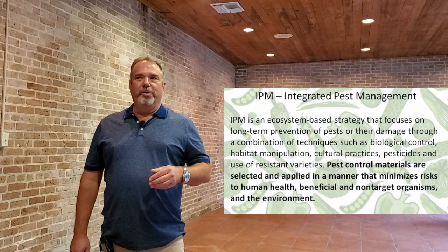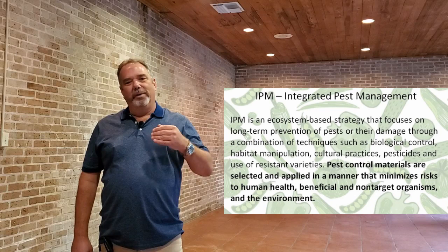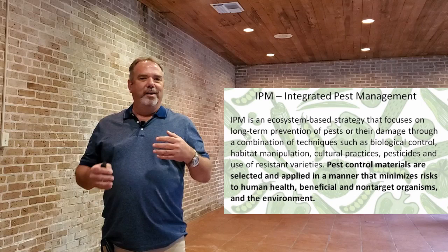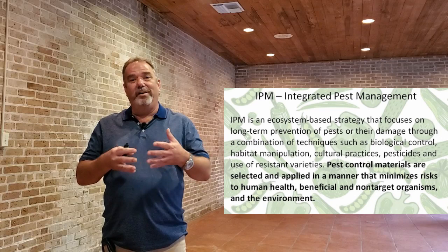Pest control materials are selected and applied in a manner that minimizes risk to human health, beneficial and non-target organisms, and the environment. When applying pesticides, we have to take care to make sure we're not harming ourselves, not harming the environment, and that we're actually trying to protect the beneficial organisms in our gardens. If we end up spraying a pesticide and kill the beneficial organisms, all we'll do is remove that pressure and the pest organisms will just multiply even better.